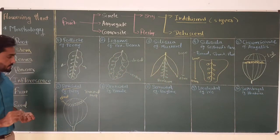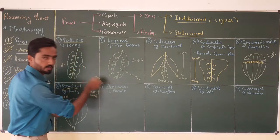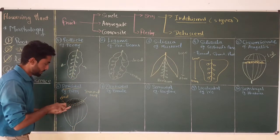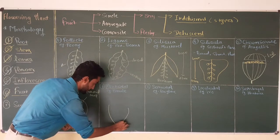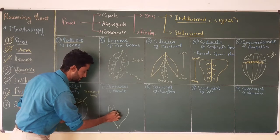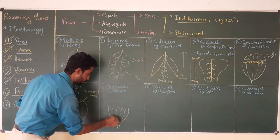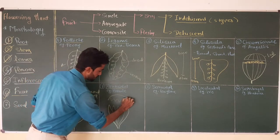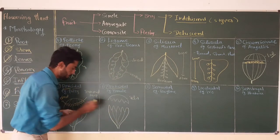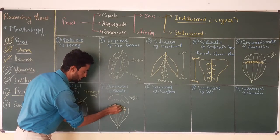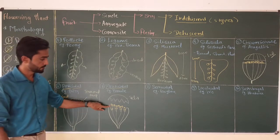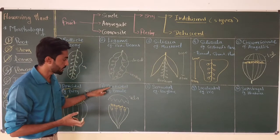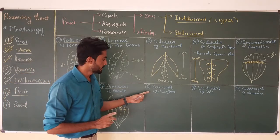The next type of capsule is denticidal. Example is primula. In case of denticidal, after opening the pericarp shows teeth-like structures. The remaining portion of the pericarp falls off, and seeds are dispersed out of the fruit. Such a structure — where the pericarp shows a teeth-like shape after opening — is called denticidal type of fruit.